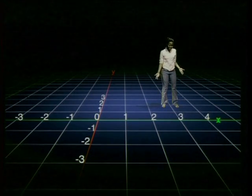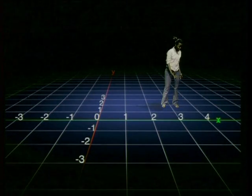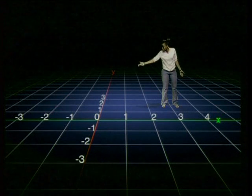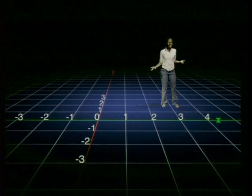I mean use the numbers on the axes to describe where you are now. Well, I'm in line with the 3 on the x-axis and in line with the 2 on the y-axis. But how would I write that down?